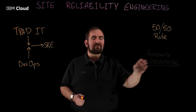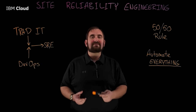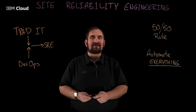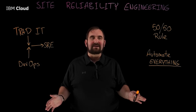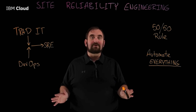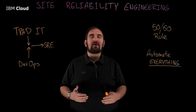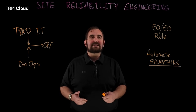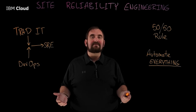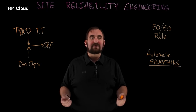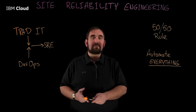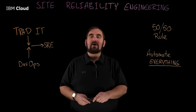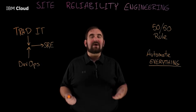Every SRE should be actively trying to automate themselves out of a job. They want to automate all of the things. The buzzword for this is reducing toil — reducing all of the manual work necessary to keep any kind of software environment up and running. This includes the hardware itself, all of the middleware, the software, and all of the related services. You have to keep these things live.